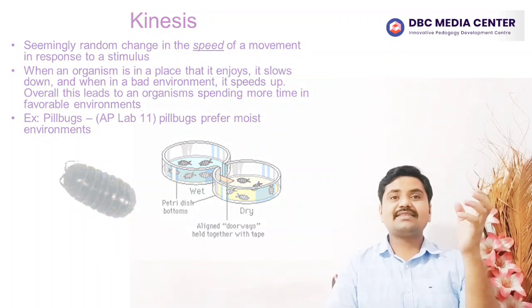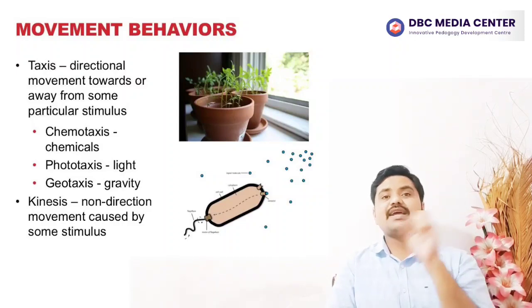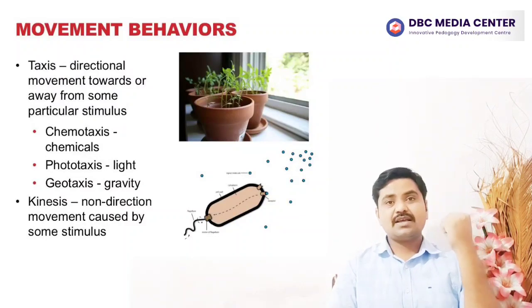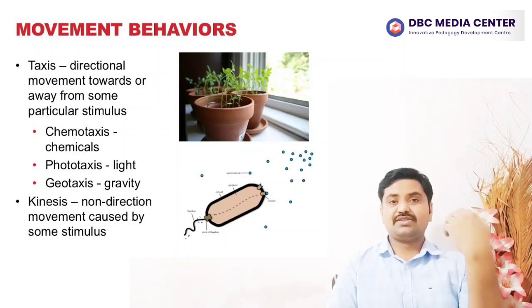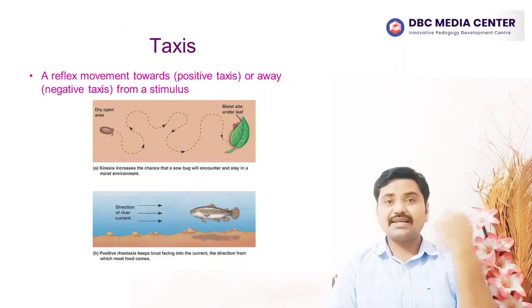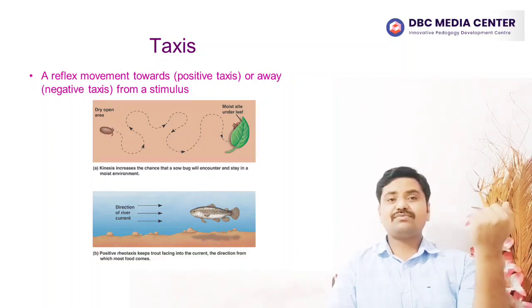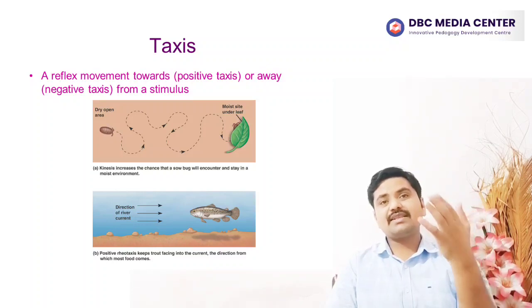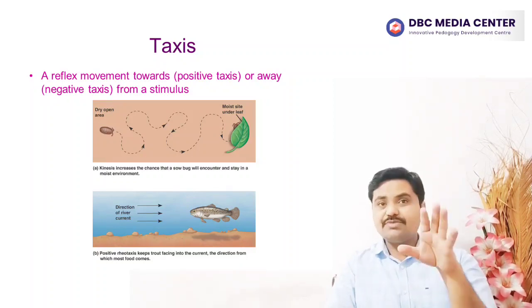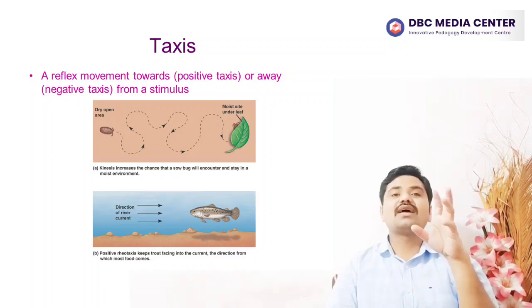In the case of taxis, it is a form of movement behavior involving movement toward or away from a stimulus. This movement can be a response to light, known as phototaxis; a chemical signal, called chemotaxis; or gravity, known as geotaxis. It can be directed toward the source — positive taxis — or away from the source — negative taxis. For example, wood lice show negative phototaxis, meaning they move away from light. This behavior helps because wood lice require a moist environment, and a sunlit spot is more likely to be warm and dry.